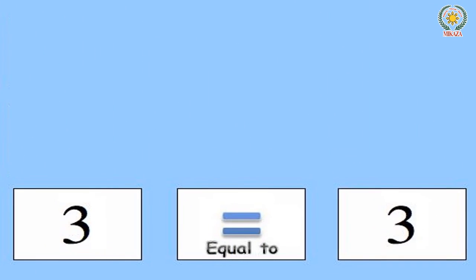If neither number is smaller or bigger than the other — for example, 3 and 3 — then we will give the equal number sign.